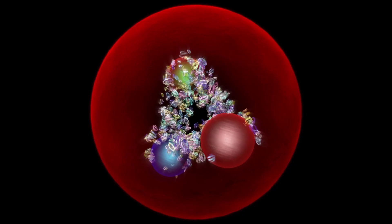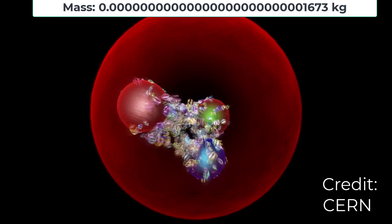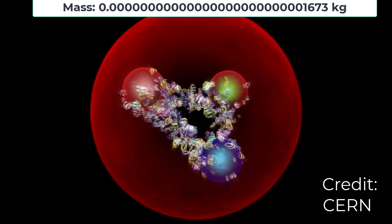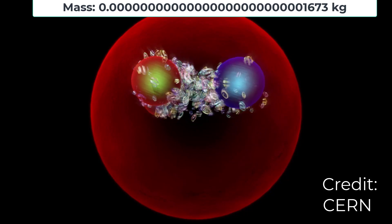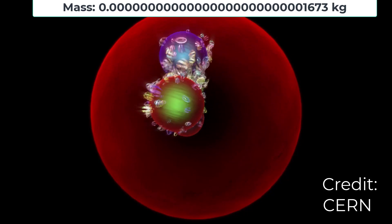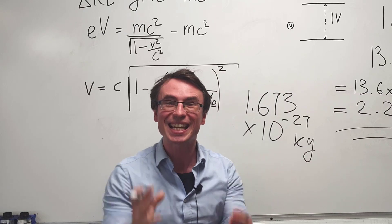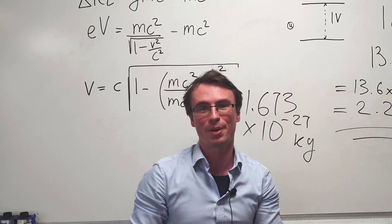Well remember what we're actually accelerating are protons, and the mass of a single proton is about 1.673 times 10 to the power of minus 27 kilograms. This is an incredibly small number.